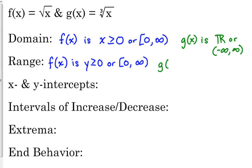For g(x), the cube root of x, we don't have any restrictions on our domain and we're not going to have any restrictions on our range either, because if you can plug in any number — positive or negative — and get the cube root of it, all the y values are going to be a possibility. This is just the domain and range when it's the simple square root of x. When we add stuff inside that square root or to the end of it, that's going to affect our domain and range — but we'll talk about that later.